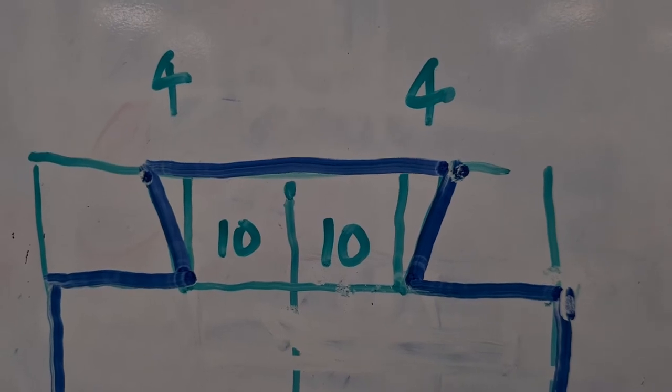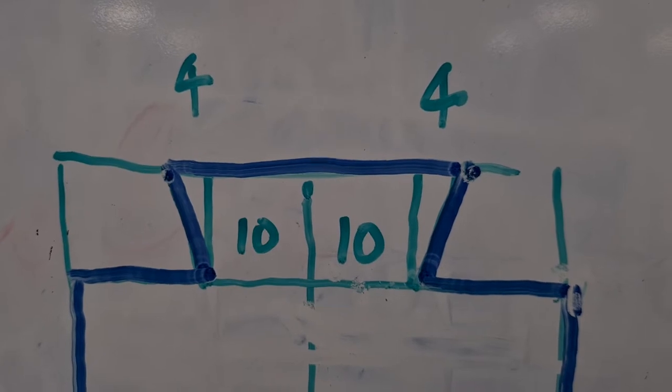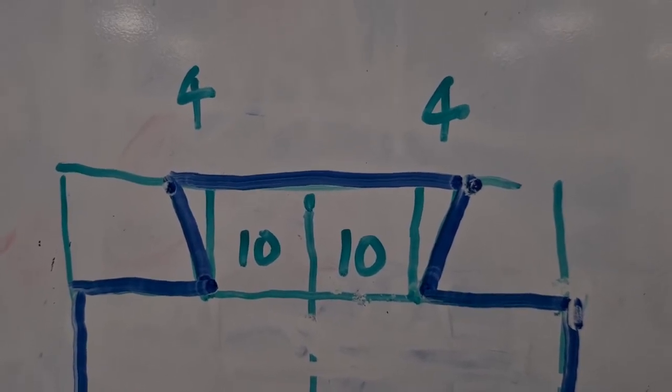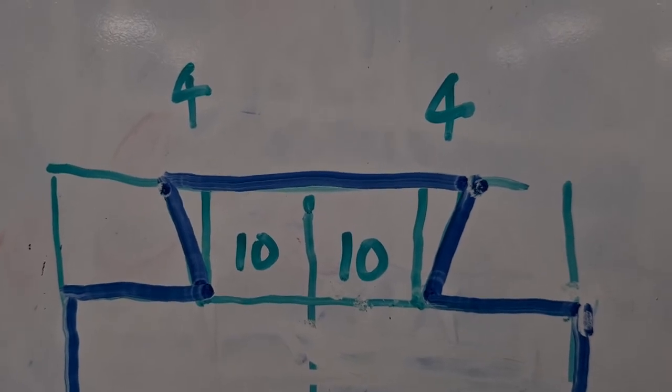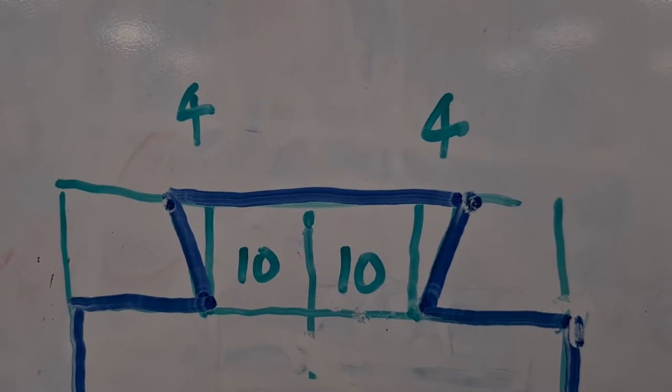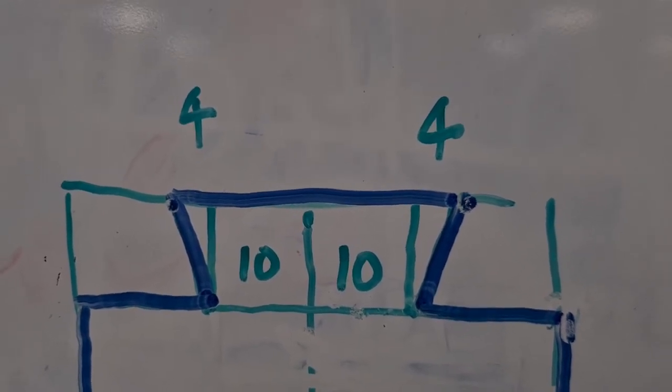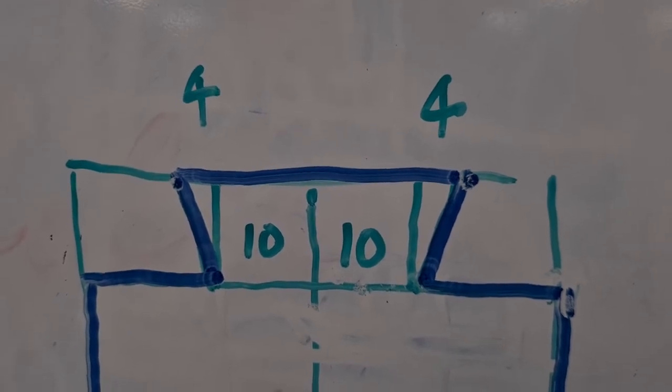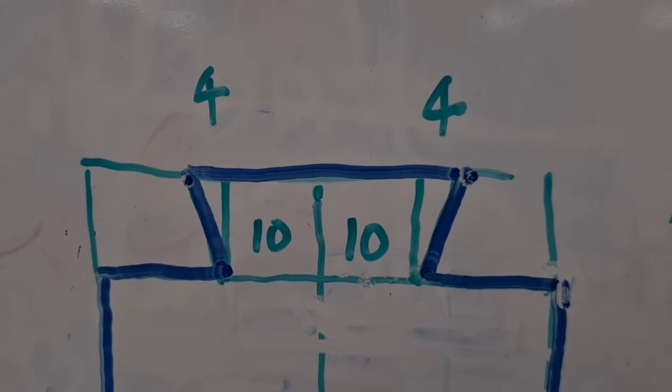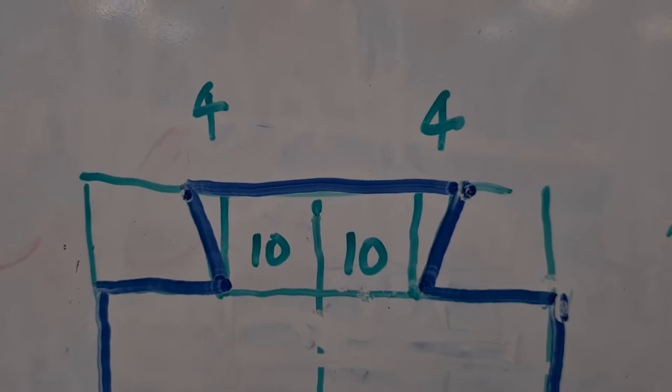The single dovetail tenon essentially it's a finger joint which is 20 millimetres wide with left and right wedges that's the triangular pieces here which are four mill wide at the top, so all together the front of the dovetail tenon is 28 millimetres reducing down to 20 millimetres at the bottom.